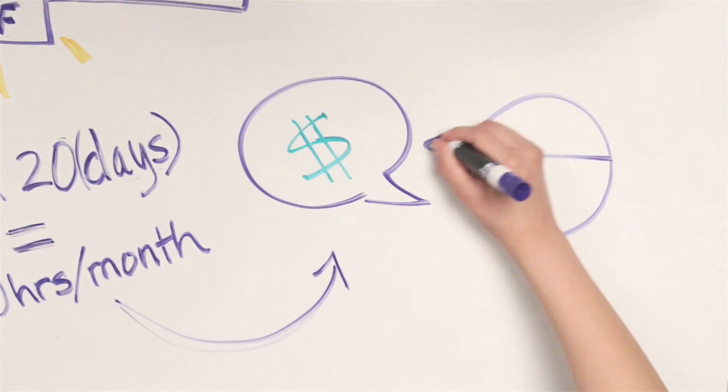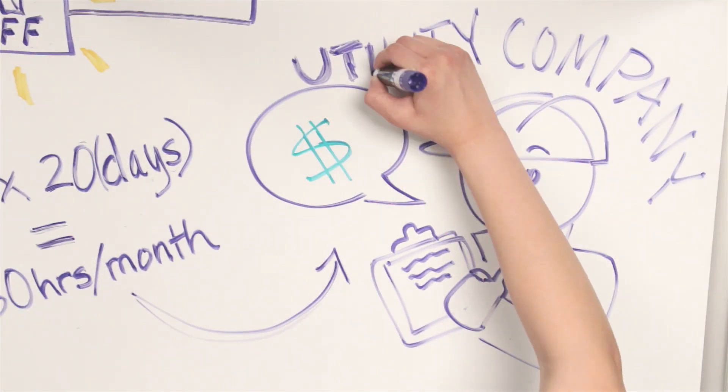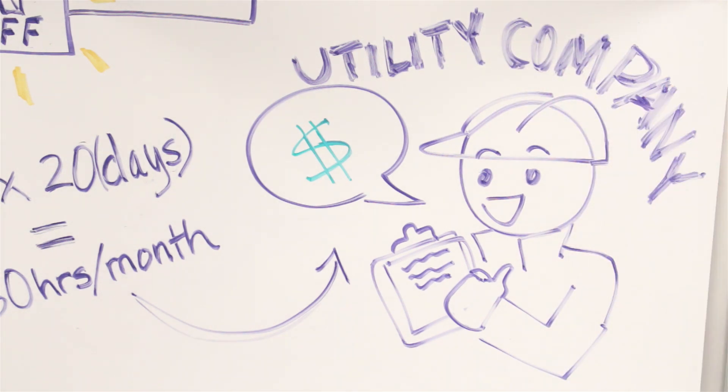And then three, you're going to want to see how much your utility company charges per kilowatt hour. Now that you have the three necessary values, follow these steps in order to calculate your total power usage.